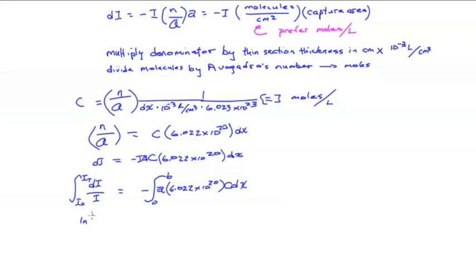When you do that, the left-hand side becomes the log of the ratio of the intensity transmitted over the intensity going into the system. The right-hand side becomes a times 6.022, 10 to the 20th times the concentration times the path length b.